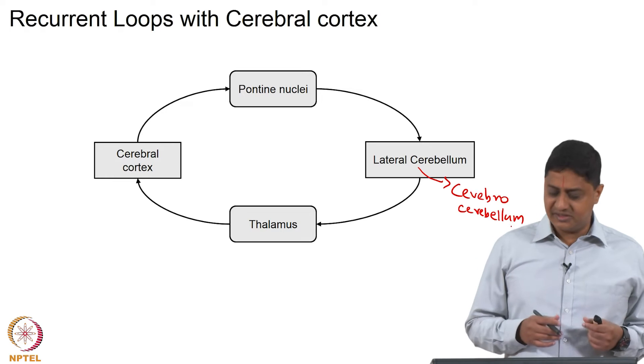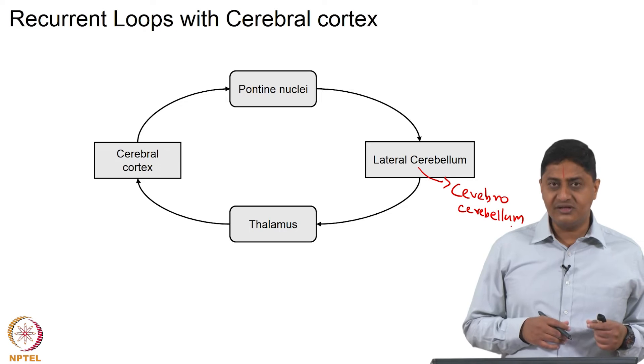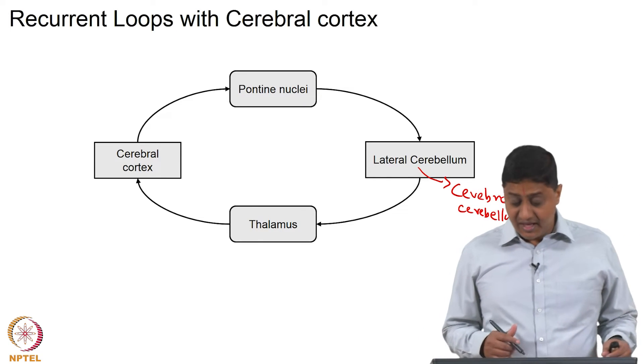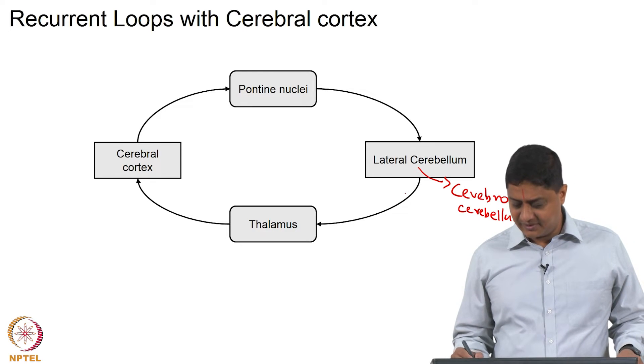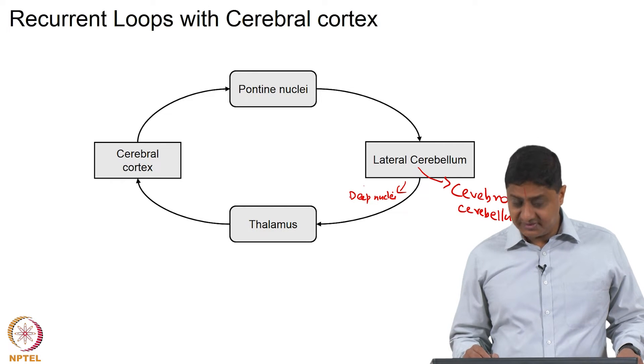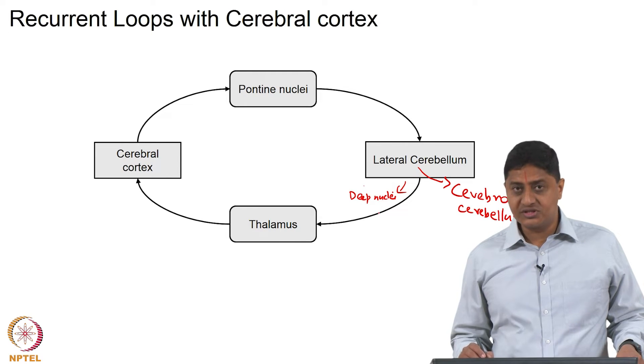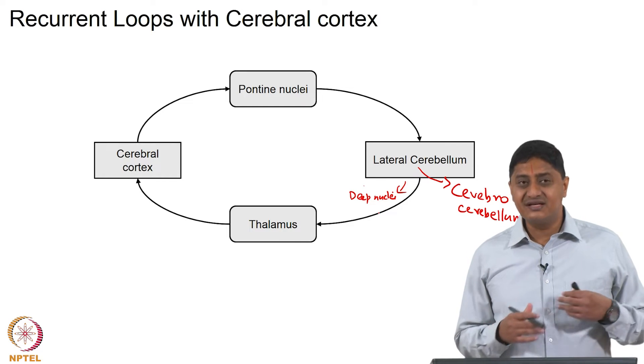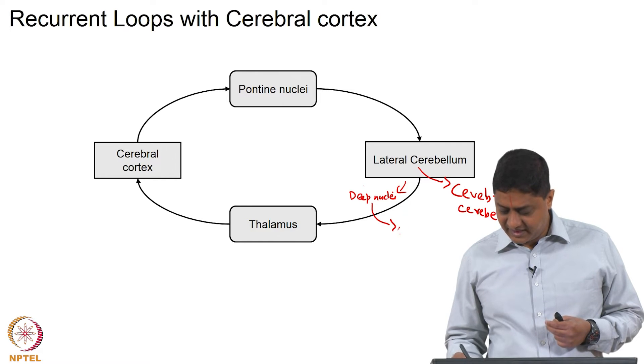The more medial regions are the spinocerebellum and the flocculonodular lobe is the vestibulocerebellum we have seen this in previous classes. And the output from the lateral cerebellum goes via the deep nuclei. Actually not shown here is the deep cerebellum, in particular the nucleus that is responsible for sending outputs to the cortex or processing information from the cerebellum. That is the dentate nucleus.